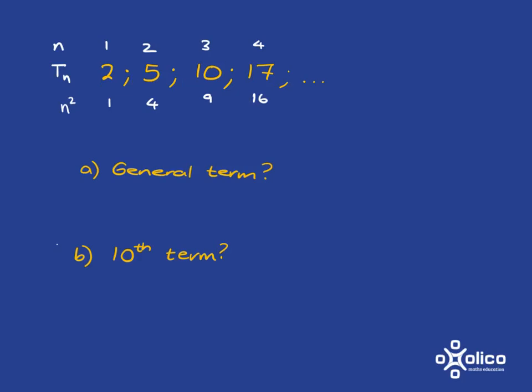And so that tells me that when I get to term number n, it's just got to be 1 more than the n squared. And so my answer here is that the formula for Tn is n squared plus 1. And then it's very easy after that to get the 10th term. It's just going to be 10 squared plus 1. And 10 squared is 100. And so 101 is the answer here.